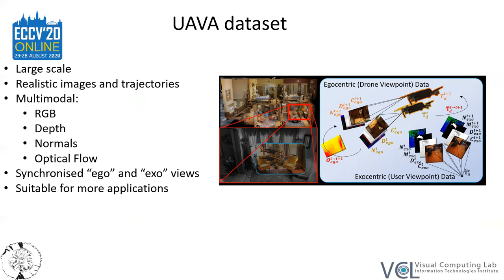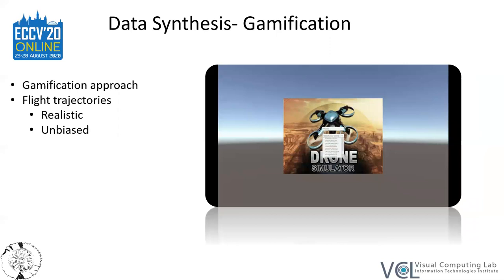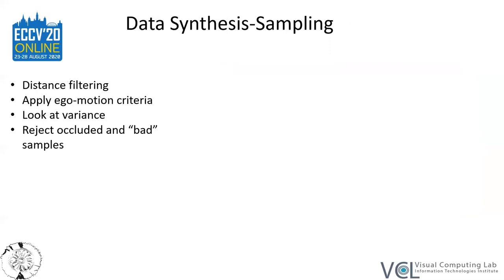For creating our dataset, we explored an existing photorealistic dataset consisting of various indoor scenes. Then we followed a gamification approach for collecting realistic and unbiased trajectories through a game developed on Unity 3D and their simulation simulators. In the next step of our data-synthesis pipeline, we processed the densely-sampled trajectories for reducing redundancy.